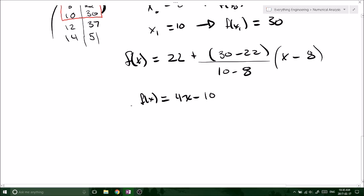That's your function, your linear interpolation of the data points that we were given. Remember the question, we need to find f of 9. That equals 4 times 9 minus 10, and that gives us 26.